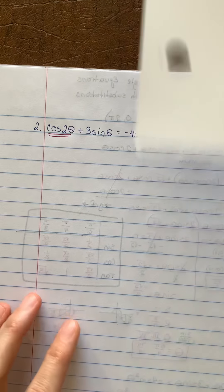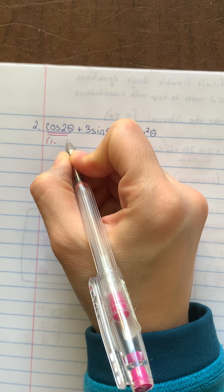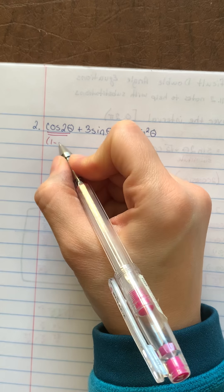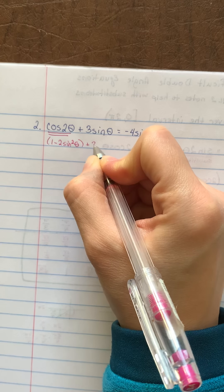So I'm going to go ahead and substitute that in. So in place of cos2θ, I'm going to plug in 1 minus 2 sine squared theta.